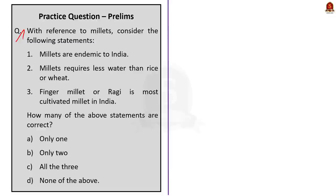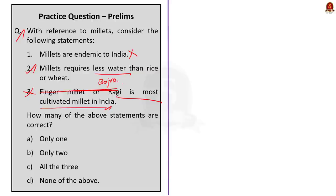Statement 1: Millets are endemic to India — this is incorrect, as millets are grown in many parts of the world, mainly in Asia and African countries. Statement 2: Millets require less water than rice and wheat — this is correct. Statement 3: Finger millet or ragi is the most cultivated millet in India — this is incorrect, because as we saw in the discussion, it is bajra that is the most cultivated millet in India. So only one statement is correct, making the correct answer option A — only one.